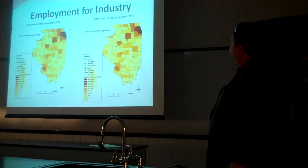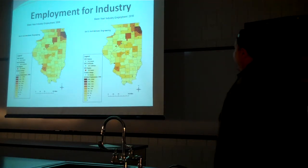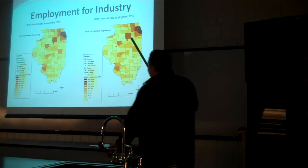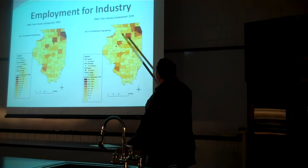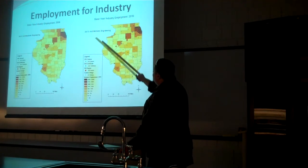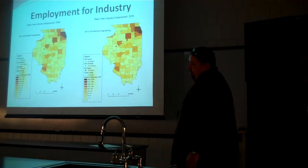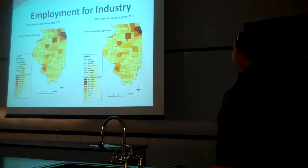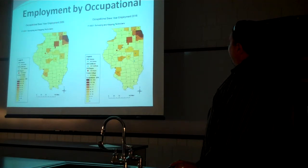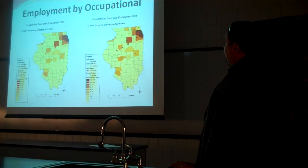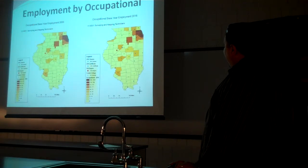These maps look similar but use different figures. This one is the industrial classification — GIS falls under architectural and engineering jobs — showing 2006 data and the 2016 projection. The occupational map is where GIS technician falls under surveying and mapping technician. You can see they're a little different — a little darker — projected higher.